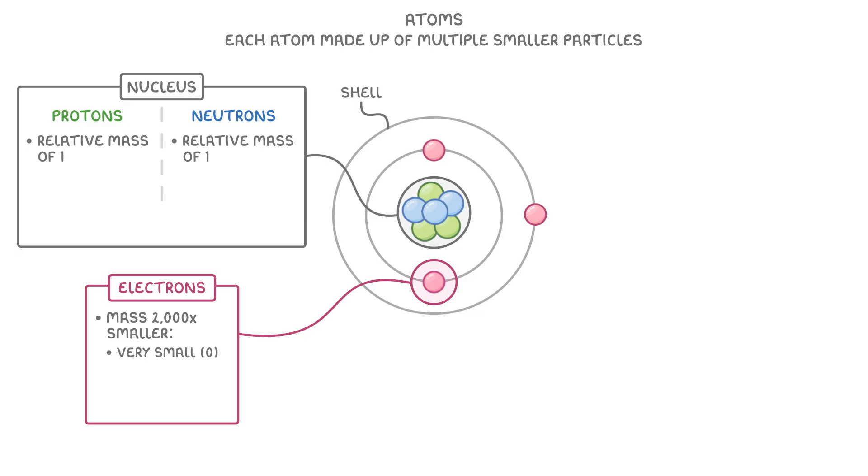Charge is a bit different though. Protons are positive and have a one plus charge, and you can remember this as both proton and positive begin with a P. Neutrons have no charge, so we say they're neutral. And this is even easier to remember because the words neutron and neutral both start exactly the same way.